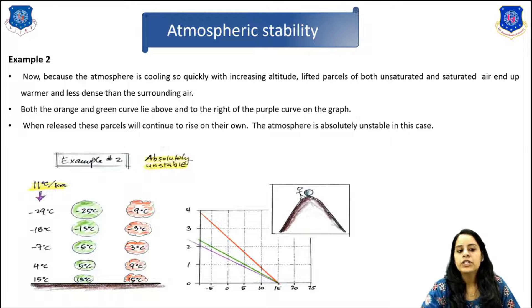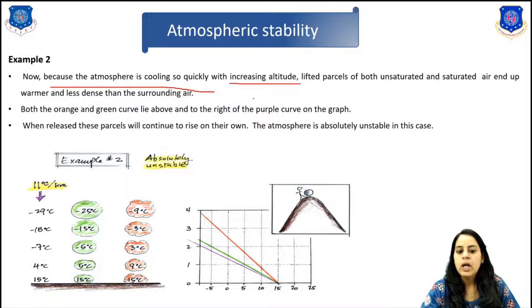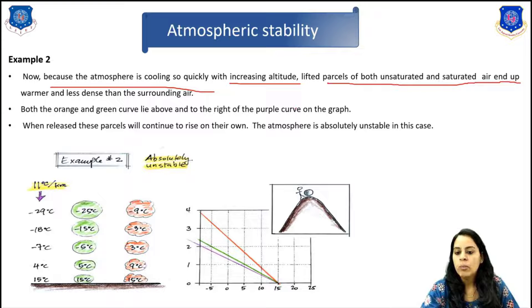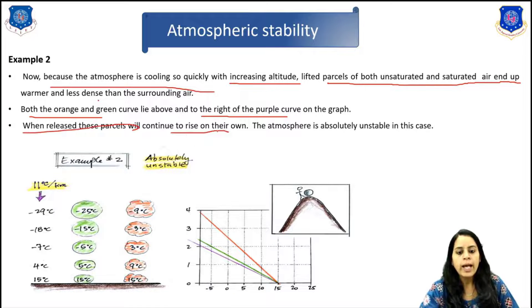Now changing the environmental lapse rate to 11 degrees Celsius per kilometer: because the atmosphere is cooling so quickly with increasing altitude, lifted parcels of both unsaturated and saturated air end up warmer and less dense than the surrounding air. Both curves on the graph lie to the right of the environmental curve.